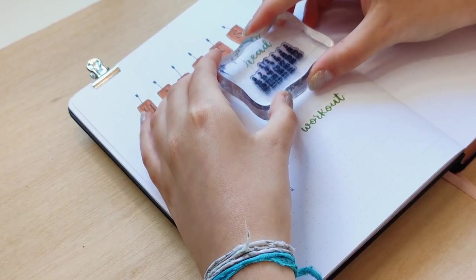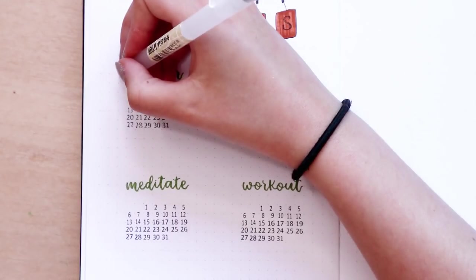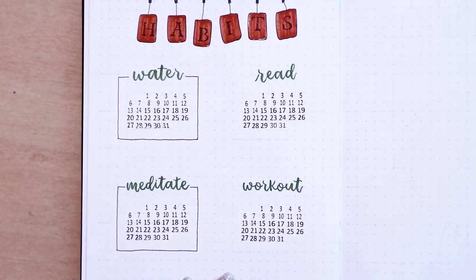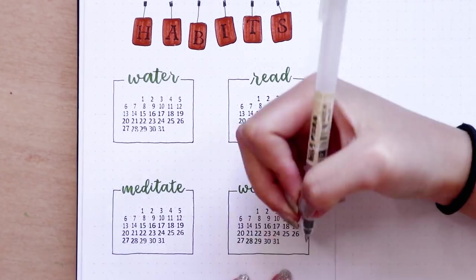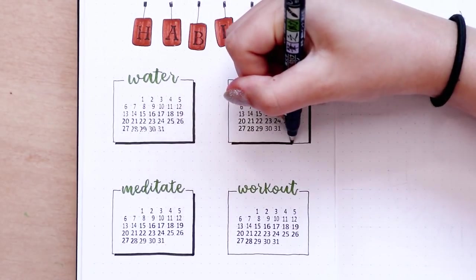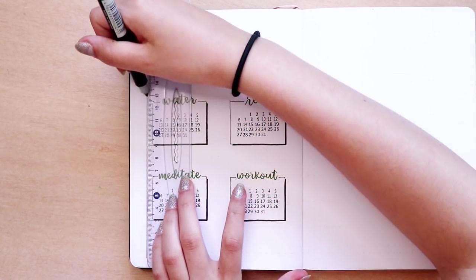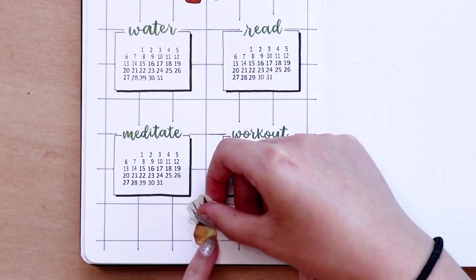I'm using a green Pentel fude touch pen from the new 2020 set collection for the headers for each habit and my calendar stamps that I got from Amazon to have mini calendars where I'm going to track my habits. I added a box around each habit with a drop shadow to give them some dimension and the grid board behind the spreads and the stickers to complete the page.